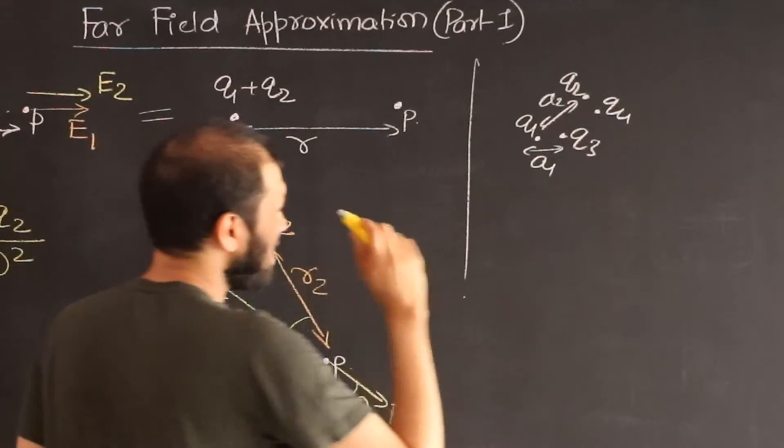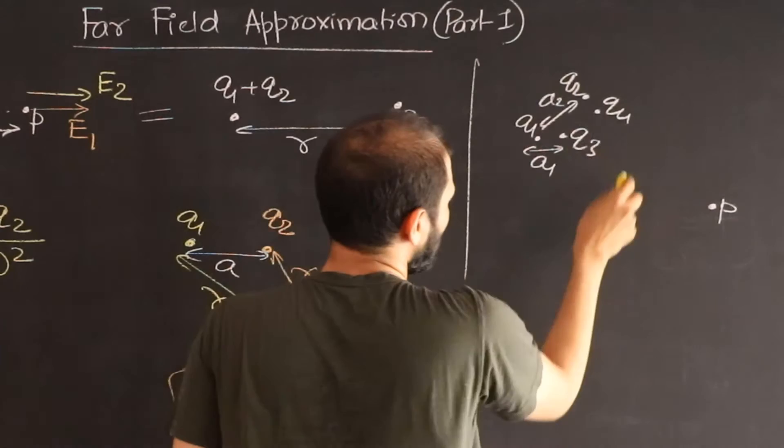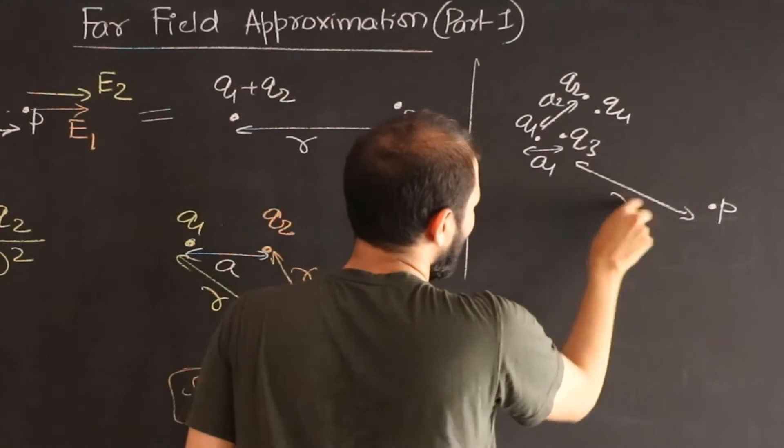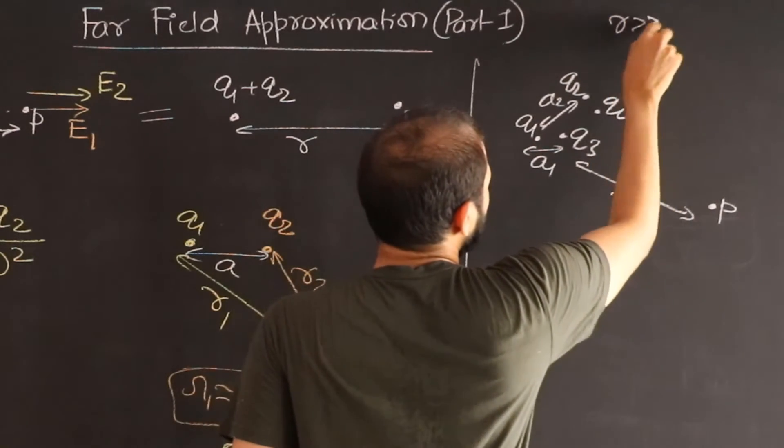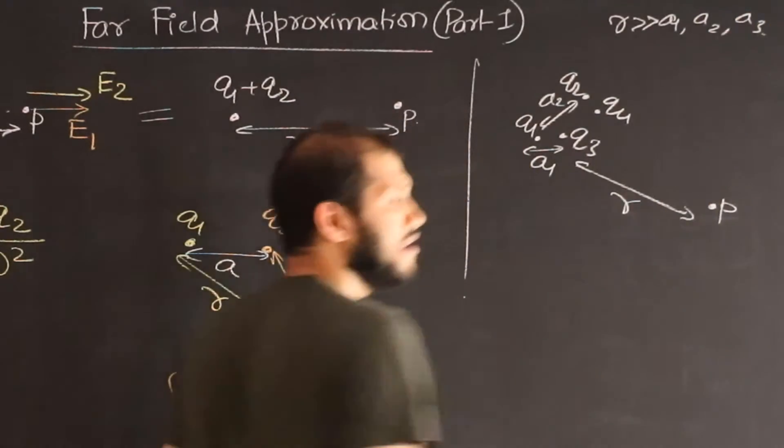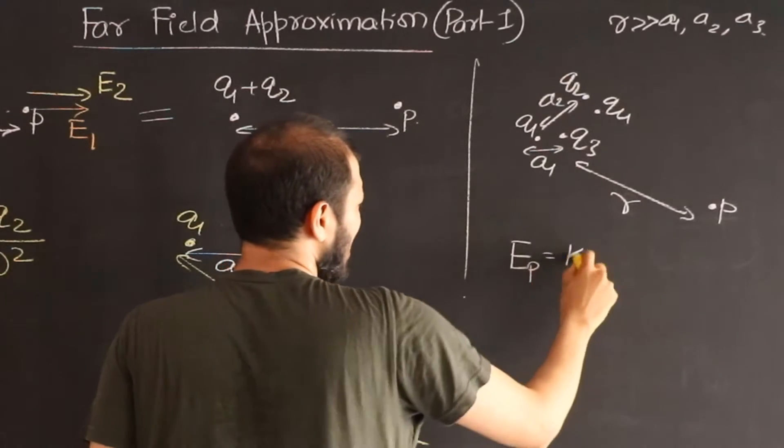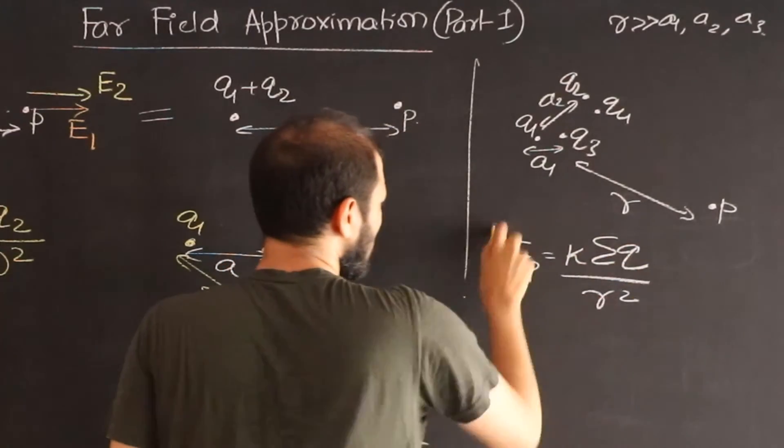But suppose we went far away from this charge configuration such that this distance from this configuration is roughly R. And we make the assumption R is much bigger than a1 or a2 or a3. Then we can say the electric field at point P is just K into summation of Q divided by R².